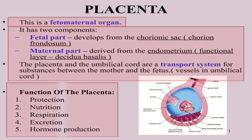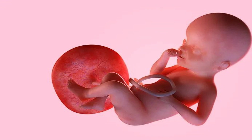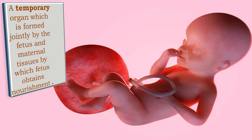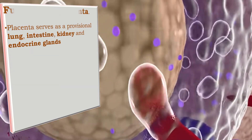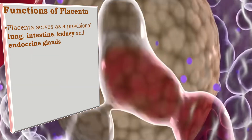The functions of placenta include protection, nutrition, respiration, excretion, and hormone production. Placenta is a temporary organ formed jointly by the fetus and the maternal tissues, by which the fetus obtains nourishment. Placenta serves as a provisional lung, intestine, kidney, and endocrine gland.